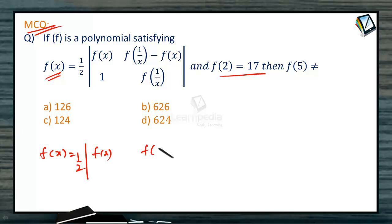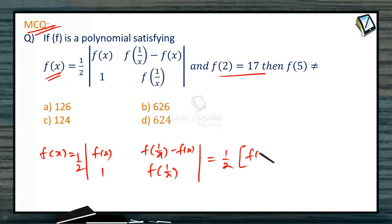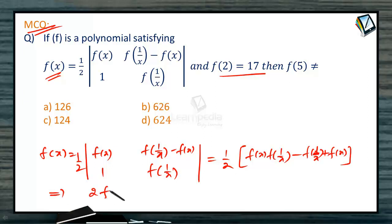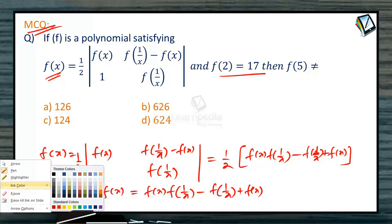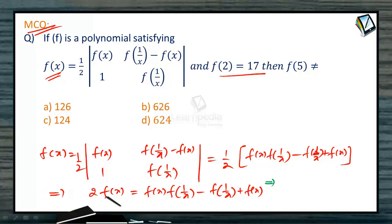Here f of x is given as half into the determinant: f of x, f of 1 by x minus f of x, 1 and f of 1 by x. Expanding this, we get half into f of x into f of 1 by x minus of f of x, minus into minus plus f of 1 by x plus f of x. So 2 into f of x equals f of x into f of 1 by x minus f of 1 by x plus f of x.